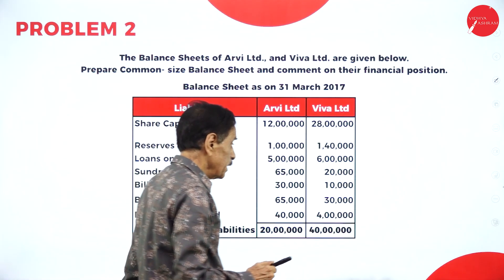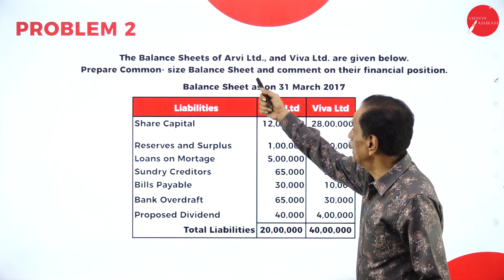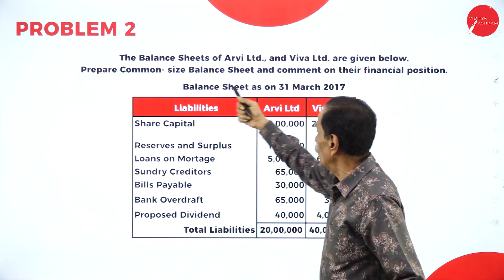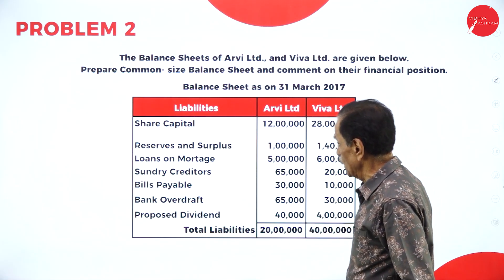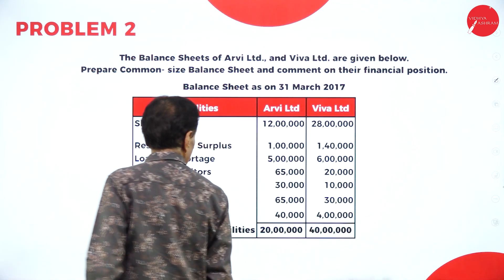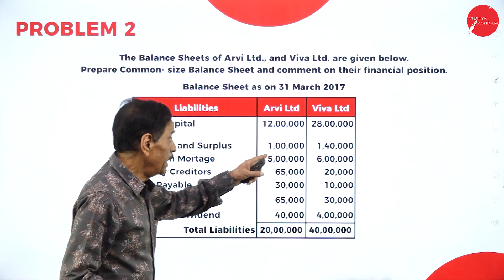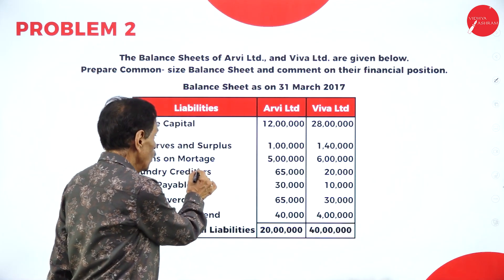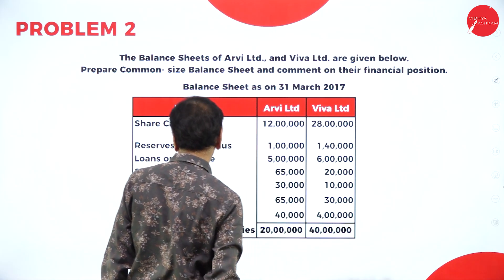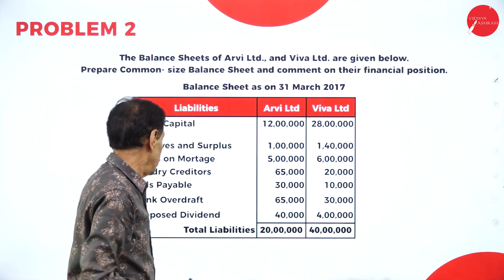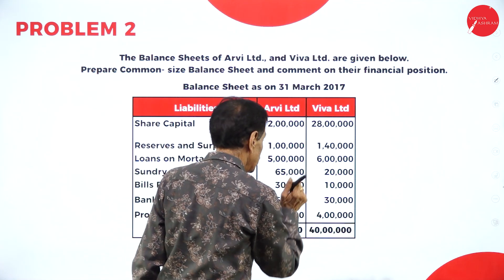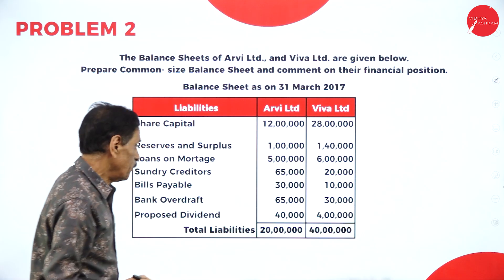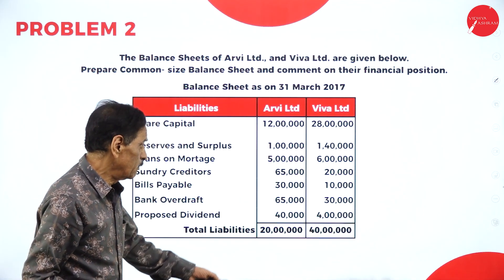Then come back to another problem. The balance sheet of RV and Viva Ltd is given below — prepare the common size balance sheet and comment on the financial position. Share capital: 12 lakh and 28 lakh. Reserve and surplus: 1 lakh and 1 lakh 40,000. Loan on mortgage: 5 lakh and 6 lakh. Creditors: 65,000 and 20,000. BP: 30,000 and 10,000. Bank overdraft: 65,000 and 30,000. Proposed dividend: 40,000 and 4 lakh.